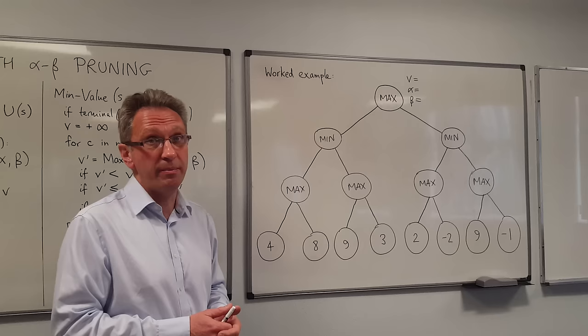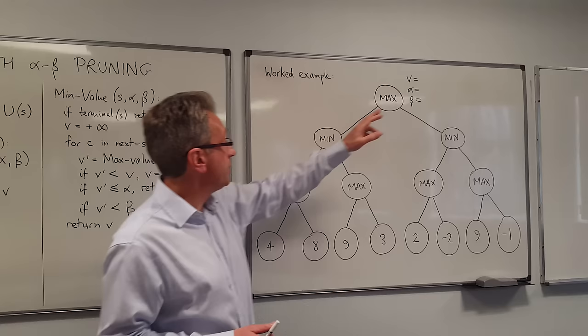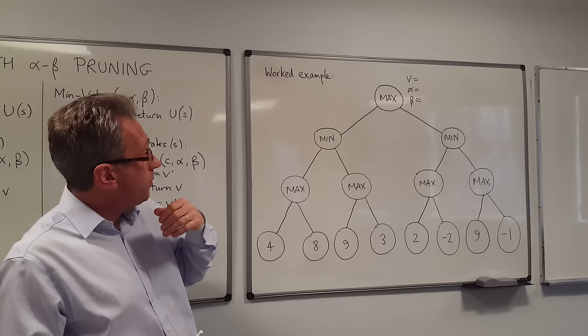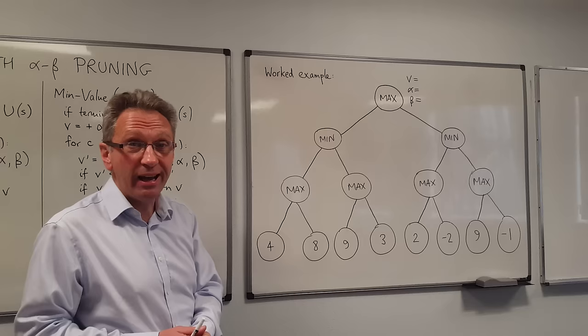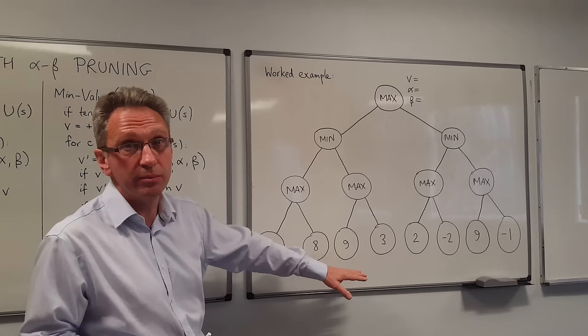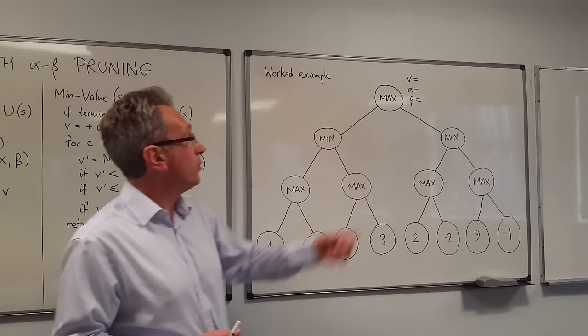They take it in turns to play — here Max is playing first, then it's Min, then it's Max. In the Minimax algorithm we're going to assume that the Min agent is playing logically. In other words, the Min agent can look all the way to the end of the game tree and can minimise the reward to Max, and that will tell us what the logical move for Max should be.